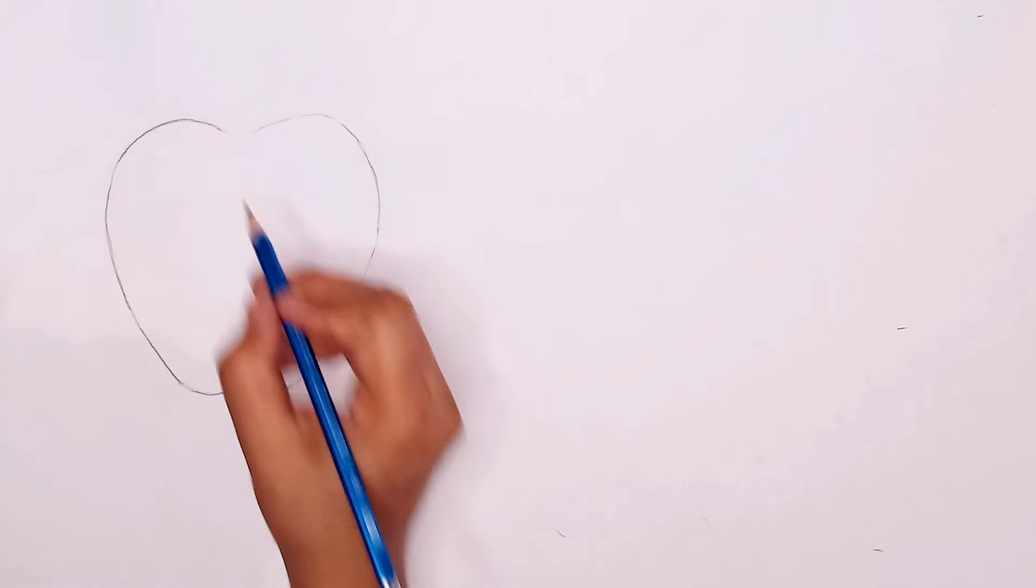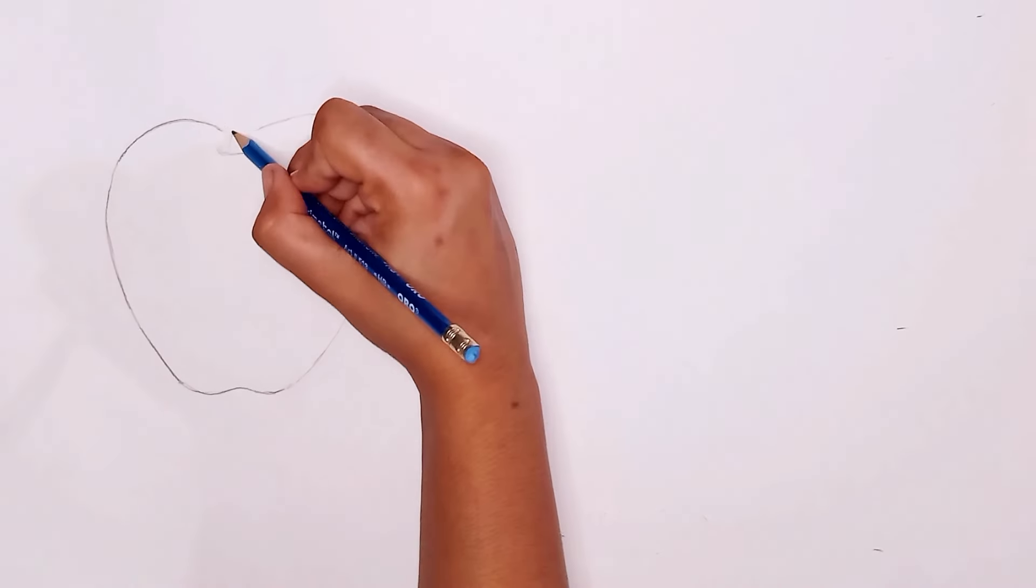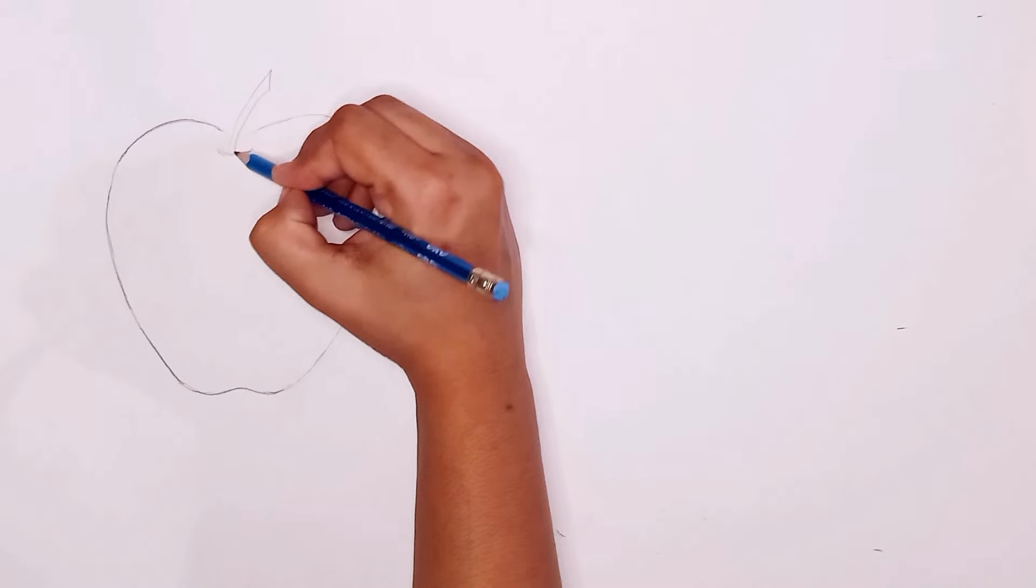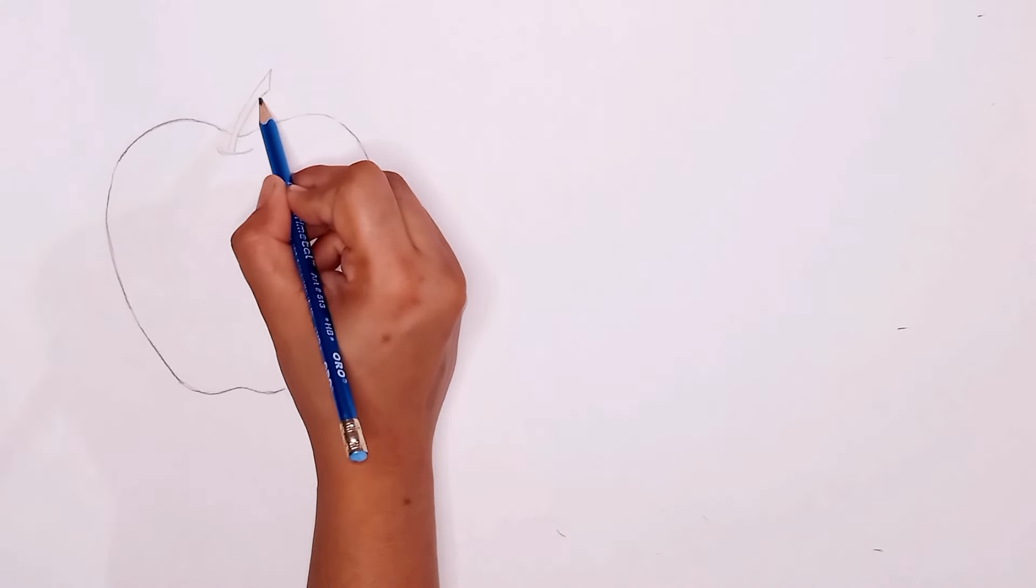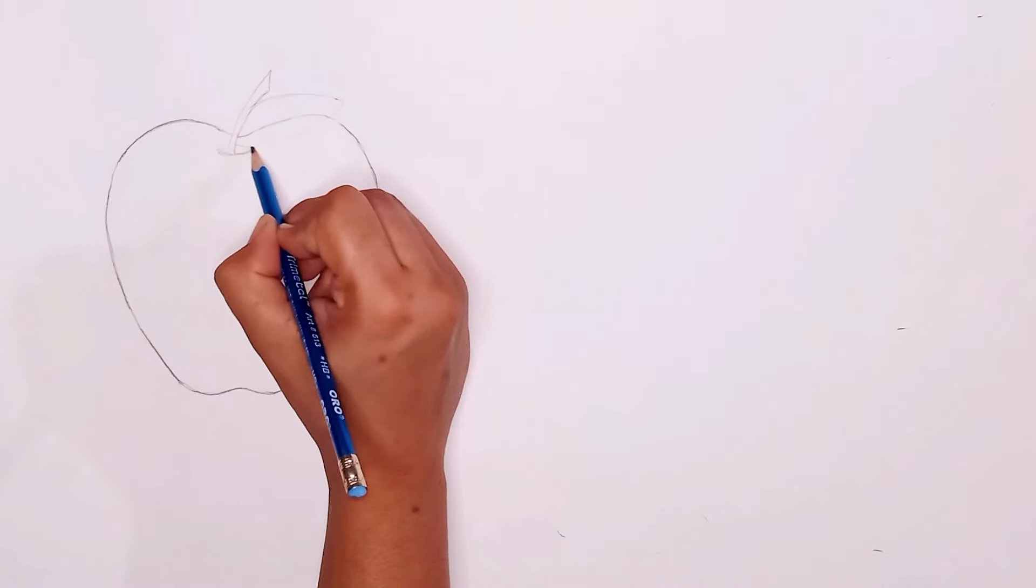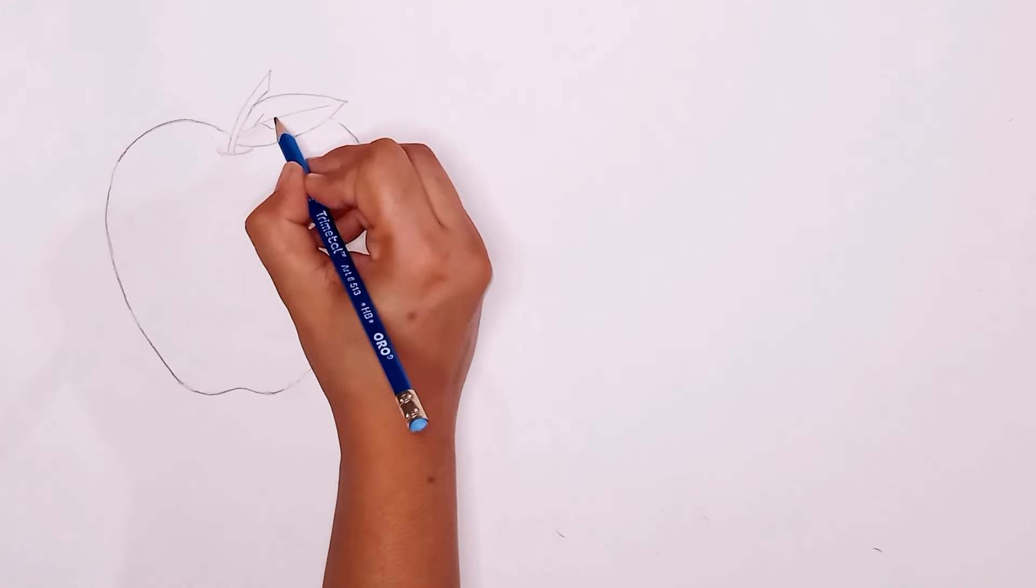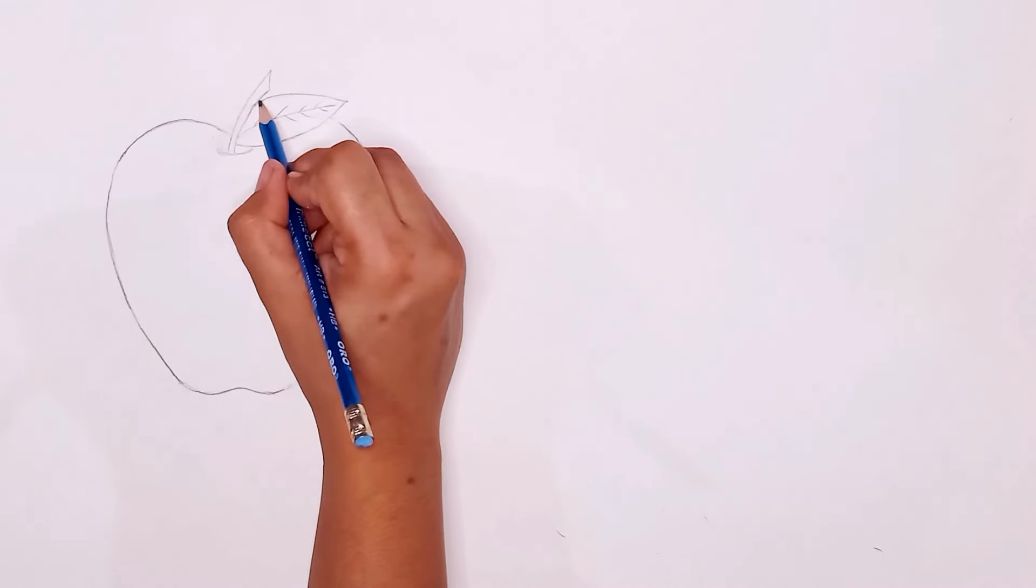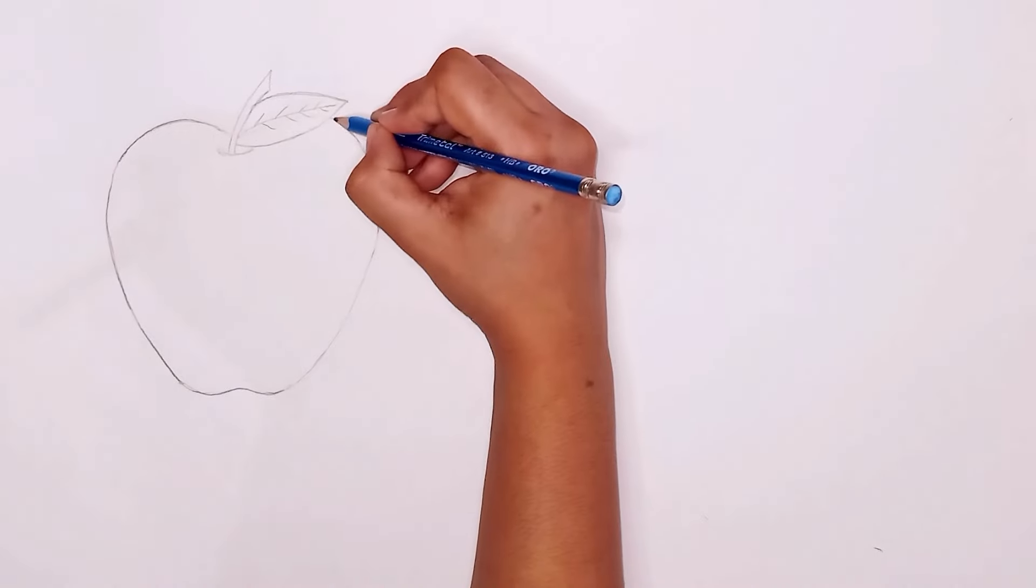Let's start with the apple. Begin by drawing a simple circle. It doesn't have to be perfect, this is just our guideline. Now, draw a small dip at the top for the stem. Add a slight curve at the bottom to give it that classic apple shape.